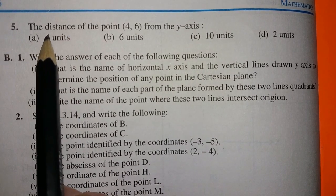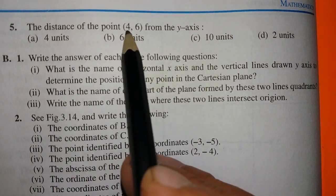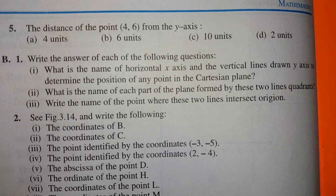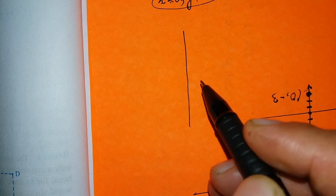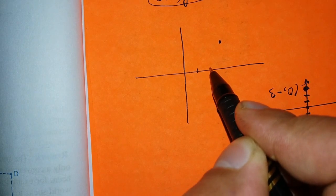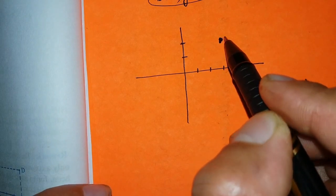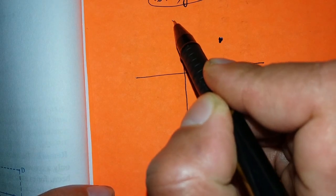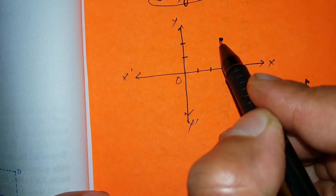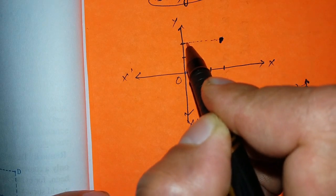Question 5: the distance of the point (4,6) from the Y axis. To answer this, you need to know what the X coordinate actually represents. The X coordinate is the perpendicular distance of a point from the Y axis. Let's look at an example: if a point is at (3,2), the perpendicular distance from the Y axis is 3 units — that is its X coordinate.